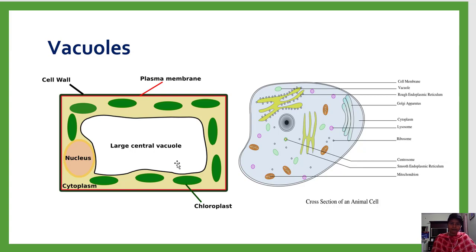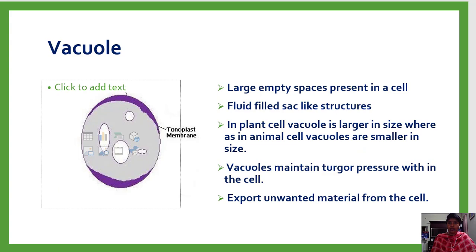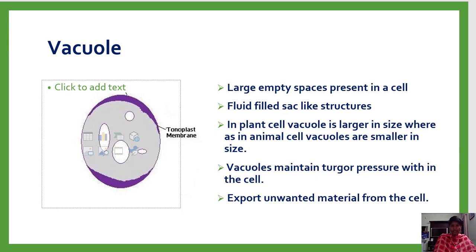Vacuoles are large empty spaces present in the cell containing fluid inside. Plant vacuoles are larger in size while animal vacuoles are smaller. Their functions include maintaining turgor pressure inside the cell and exporting unwanted materials from the cell. The membrane surrounding the vacuole is called the tonoplast.